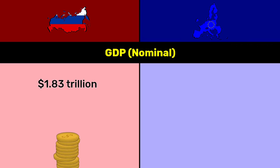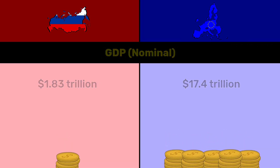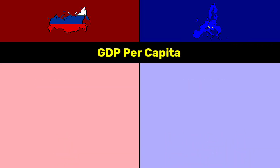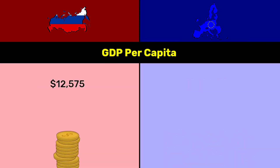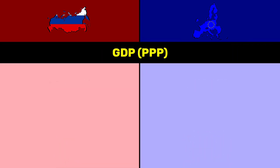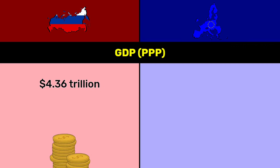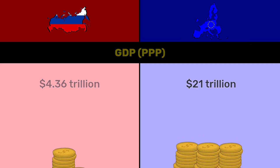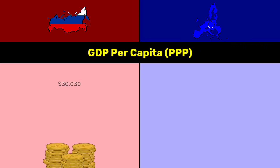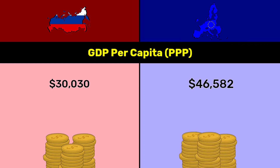GDP nominal: Russia 1.83 trillion dollars, EU 17.4 trillion dollars. GDP per capita: Russia $12,575, EU nearly $41,000. GDP PPP: Russia 4.36 trillion dollars, EU 21 trillion dollars. GDP per capita PPP: Russia $30,013, EU $46,582.